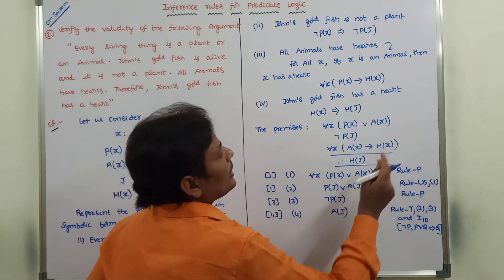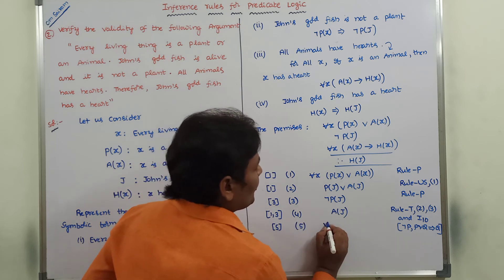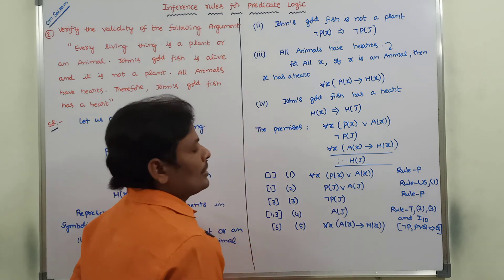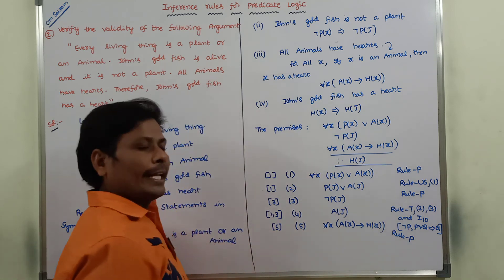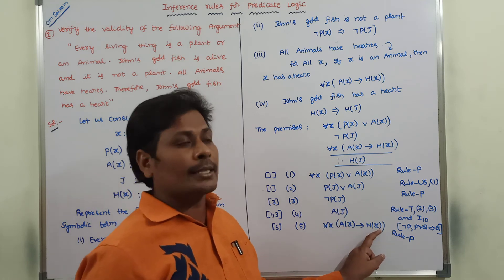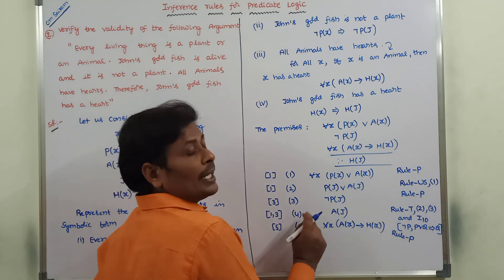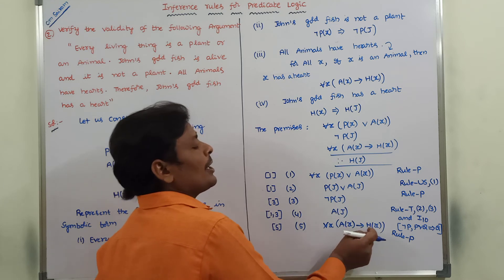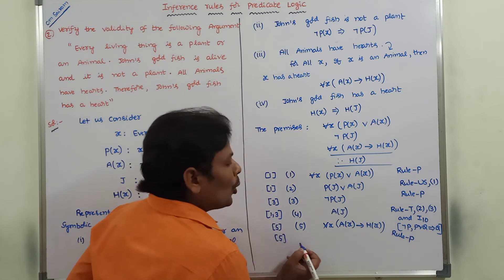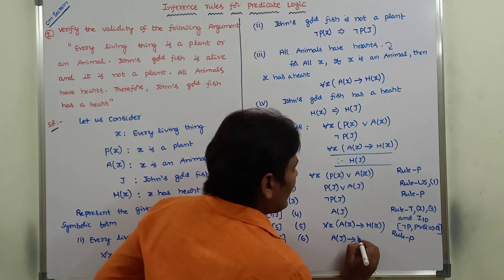Step 5: introduce premise 'for all x, A(x) → H(x)' into the derivation by rule P. Since A(j) is already derived and we need A(j) → H(j), we apply rule US on step 5 to eliminate the universal quantifier and substitute j for x. Step 6: by rule US applied on step 5, we get A(j) → H(j).